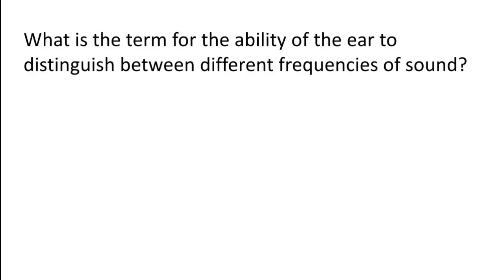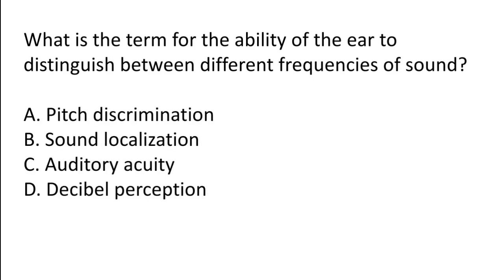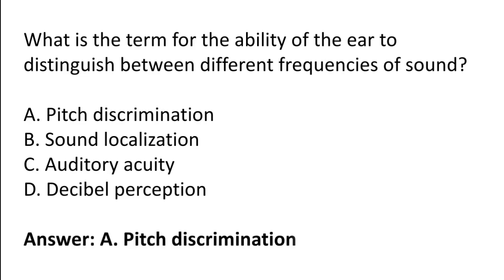What is the term for the ability of the ear to distinguish between different frequencies of sound? Options: pitch discrimination, sound localization, auditory acuity, disabled perception. The correct answer is option A — pitch discrimination.